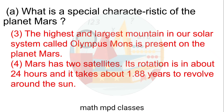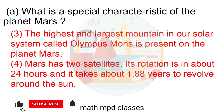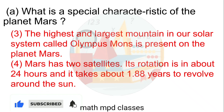Mars has two satellites. Its rotation takes about 24 hours. It takes about 1.88 years to revolve around the sun.